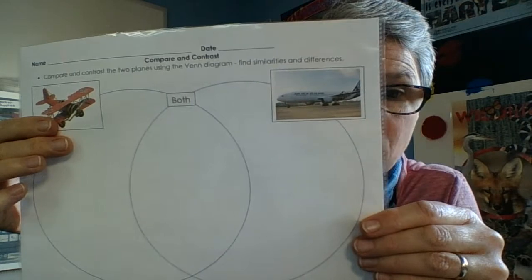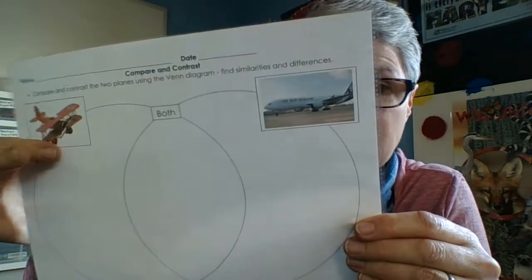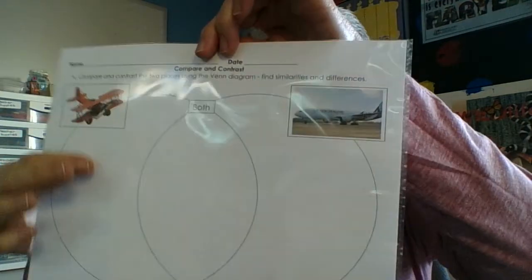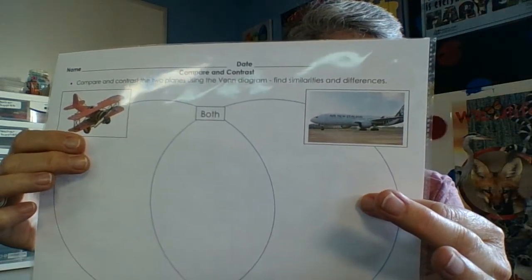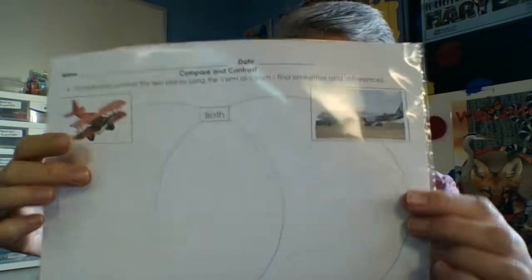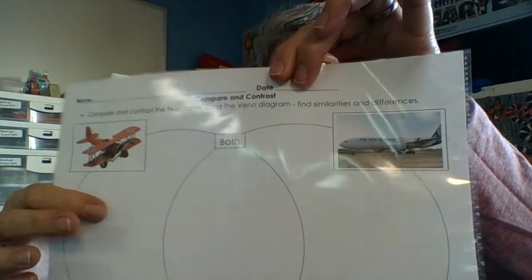So for example, I might write on this one here has two wings and this one only has one wing. It's a monoplane whereas this one is a biplane.